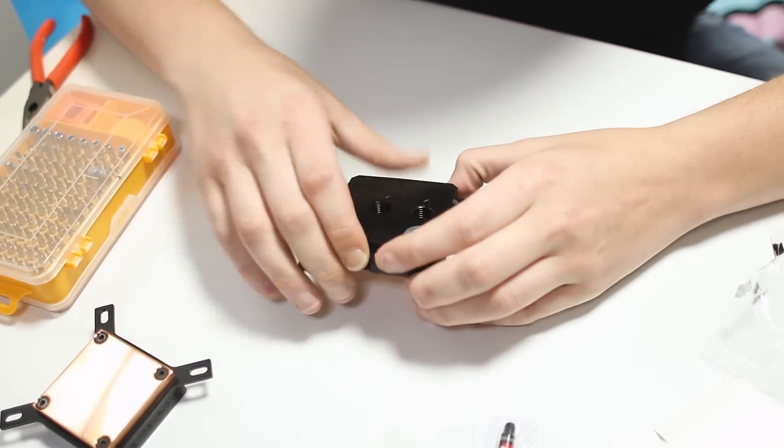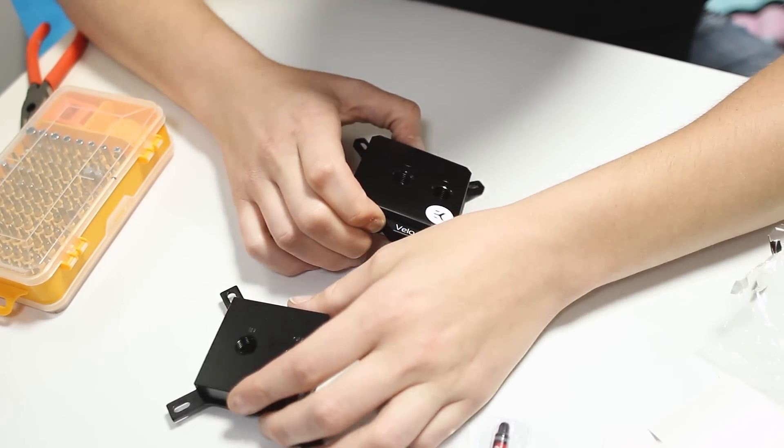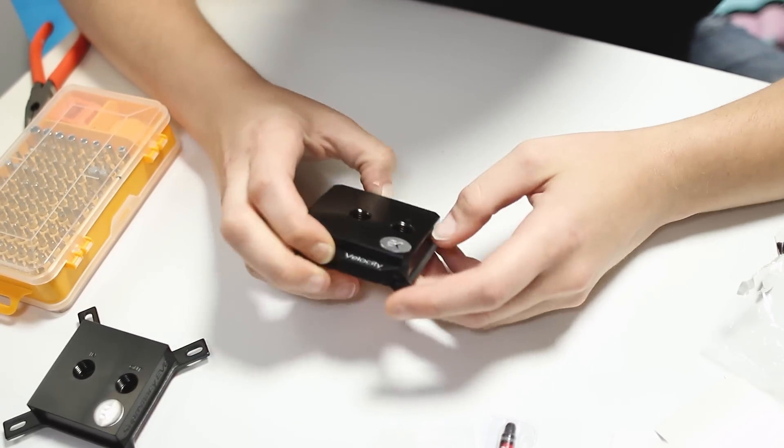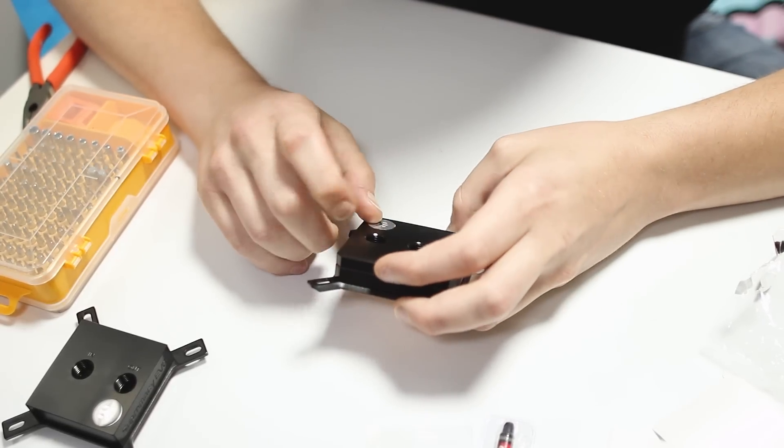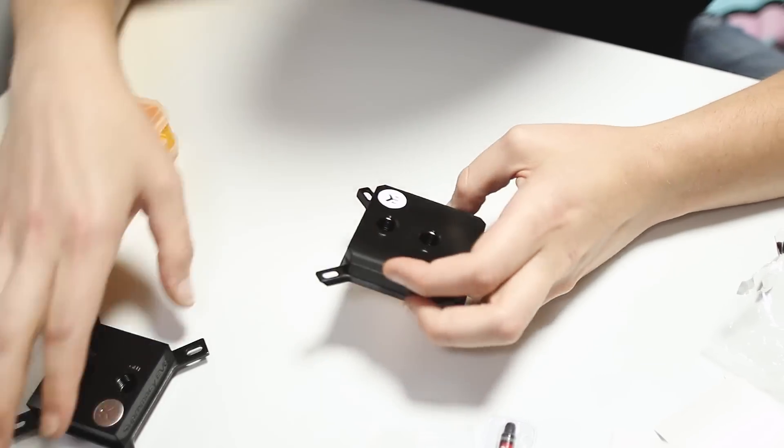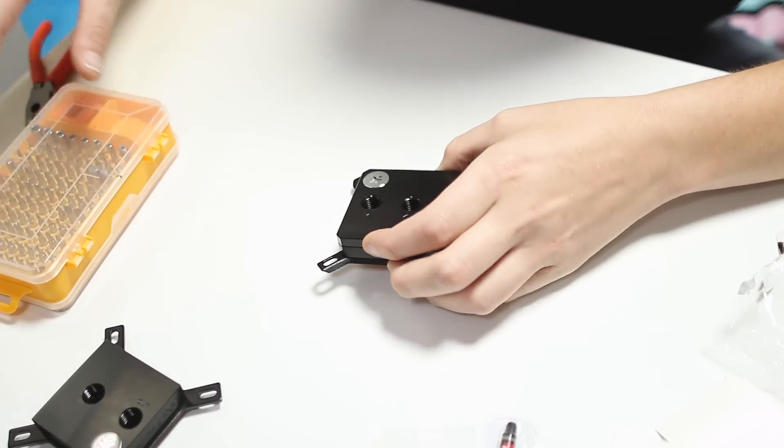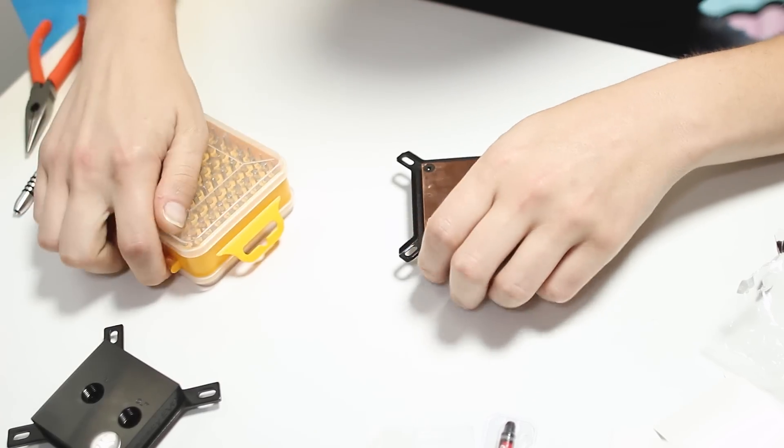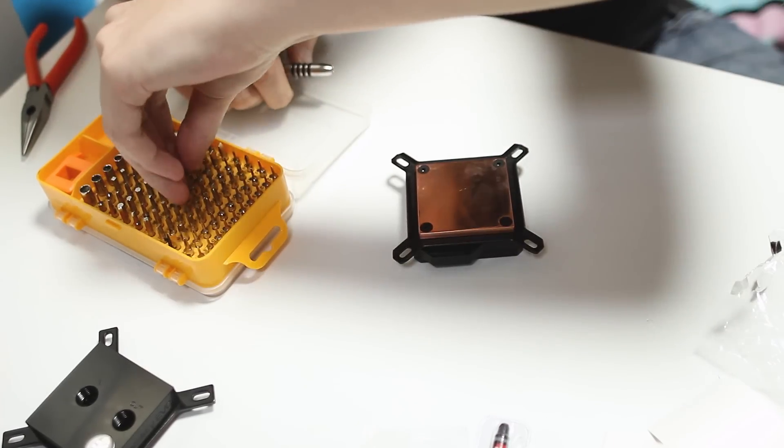I did notice that the Velocity, the new block, it looks like the out port is directly over a bunch of fin stock, more so than the Supremacy block. So that might help with cooling a little bit. But we're going to take apart both of these and find out exactly.